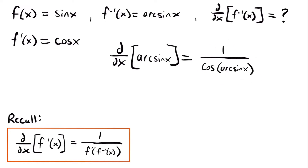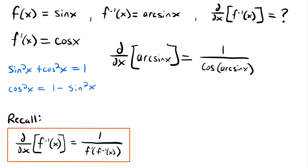We can rewrite this using a trig identity. Specifically, sine squared x plus cosine squared x equals 1. Solving for cosine x: cosine squared x equals 1 minus sine squared x, and taking the square root of both sides gives cosine x equals the square root of 1 minus sine squared x. We can now replace cosine of arc sine of x with this expression, plugging arc sine of x in for x.